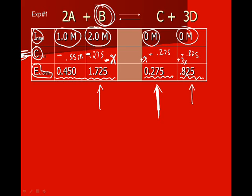The equilibrium concentrations are shown here in the bottom. For A, we have a coefficient of 2, so we're going to take away 2X. We took away 0.55 molarity from the original concentration and ended up with 0.450.